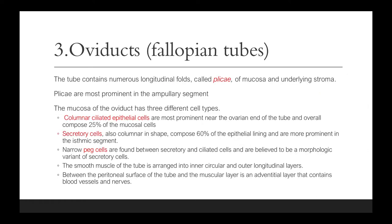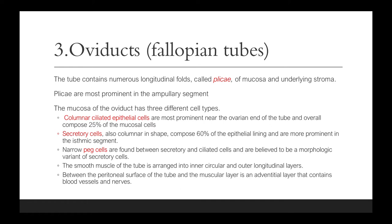The tube contains numerous longitudinal folds called plicae of the mucosa and underlying stroma. The plicae are most prominent in the ampullary segment. The mucosa of the oviduct has three different cell types: columnar ciliated epithelial cells, which are most prominent near the ovarian end and compose 25% of the mucosal cells; secretory cells, which are also columnar and compose 60% of the epithelial lining and are more prominent in the isthmic segment; and narrow peg cells, found between secretory and ciliated cells, believed to be a morphologic variant of secretory cells.